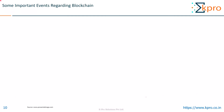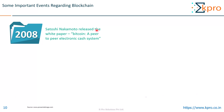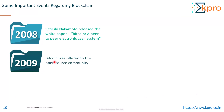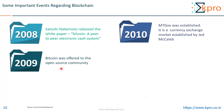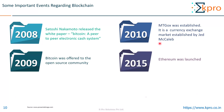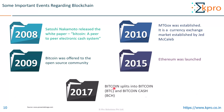Next let us see some important events regarding blockchain. In 2008, Satoshi Nakamoto released the white paper 'Bitcoin: A Peer-to-Peer Electronic Cash System.' In 2009, Bitcoin was offered to the open source community. In 2010, the currency exchange market was established by Jed McCaleb. In 2015, Ethereum was launched. In 2017, Bitcoin split into Bitcoin and Bitcoin Cash. Whenever I give theoretical descriptions about blockchain, I'll consider the Bitcoin blockchain as the reference blockchain.